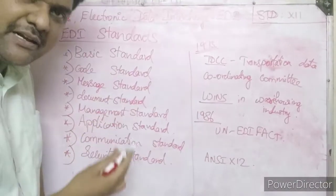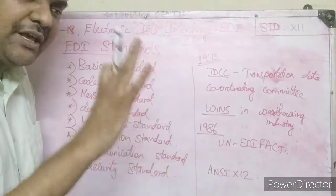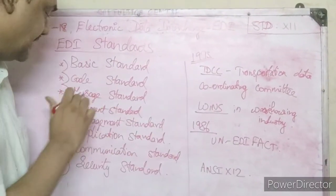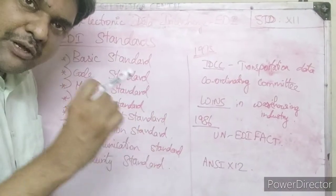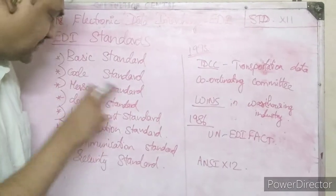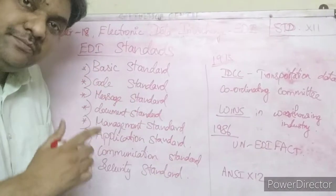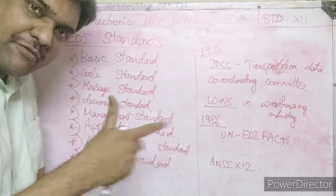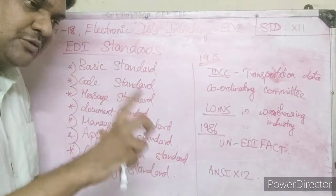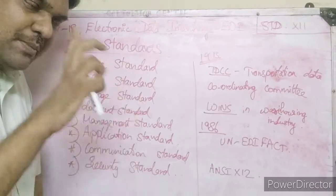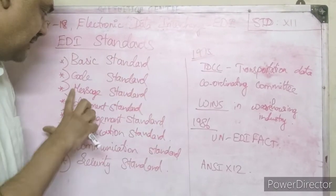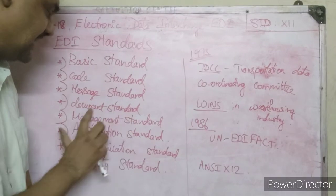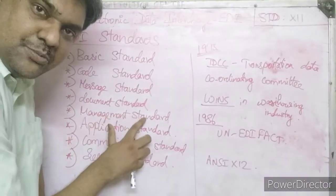The first one is the basic standard, or basic EDI message. If you know how to use a standard code or a standard message, ordinary documents like PDF files can be replaced with a standard format that is globally accepted. That is the EDI standard. There are message standards, document standards, and management standards.